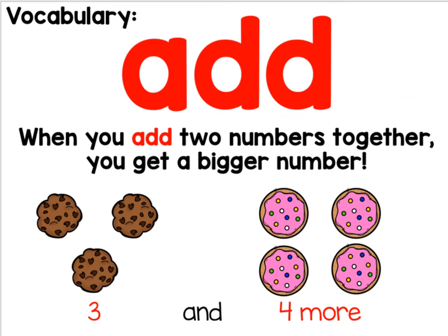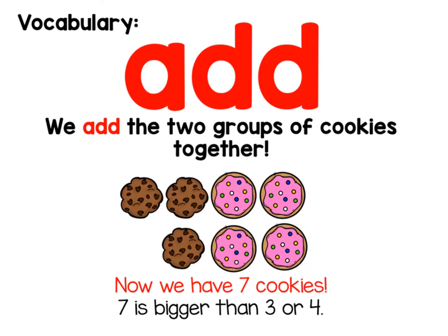Add - when you add two numbers together, you get a bigger number. Three and four more. Add, we add the two groups of cookies together. Now we have seven cookies. Seven is bigger than three or four.